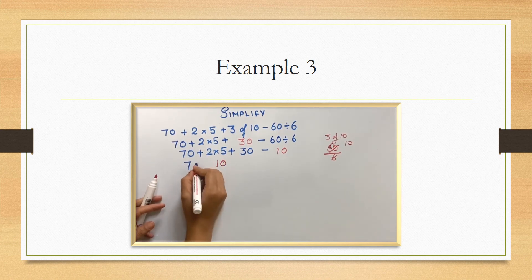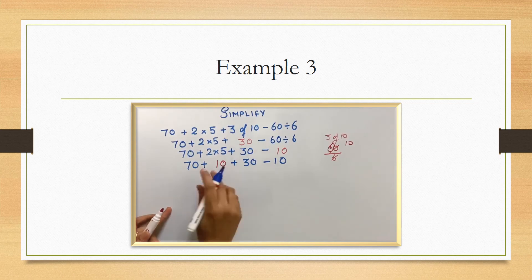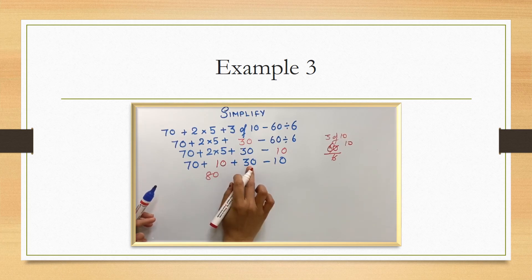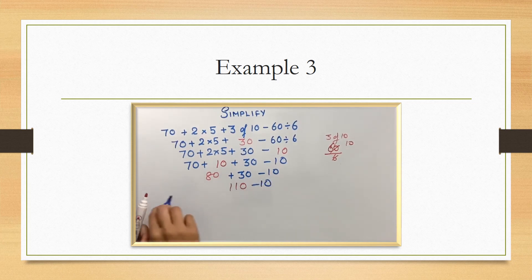After multiplication, it's addition. From left to right we have to do. If the order of operation is same, then proceed from left to right. So first do 70 plus 10, which is 80. 80 plus 30 is 110. You can do it in a single step. 110.